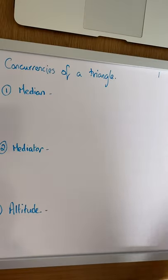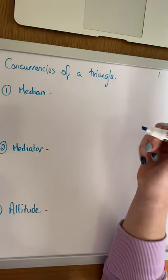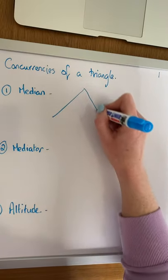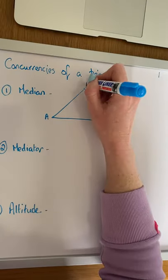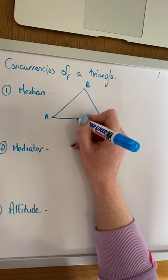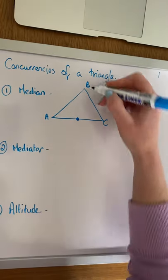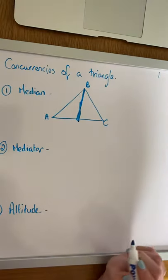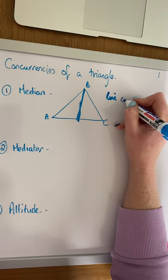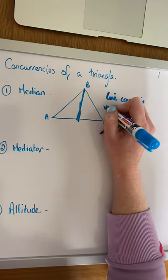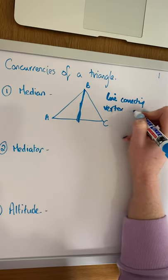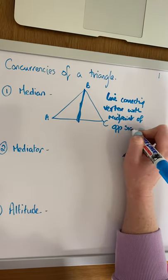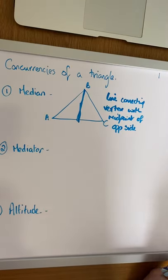It's best described using a diagram. The median of a triangle is a line connecting the vertex of a triangle to the midpoint of the opposite side. So if we have our triangle ABC, the median is connecting the midpoint of AC to the vertex B. That is the median — a line connecting the vertex with the midpoint of the opposite side.